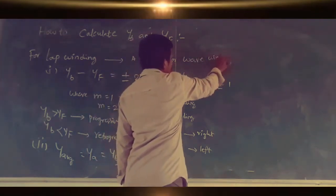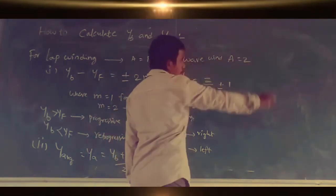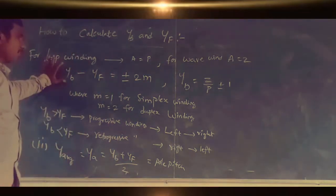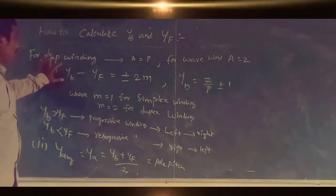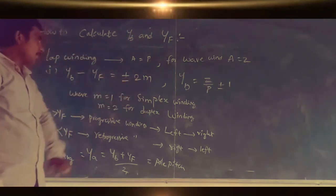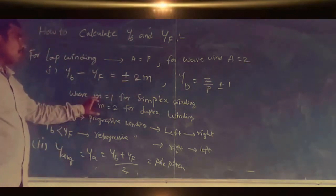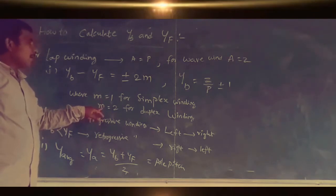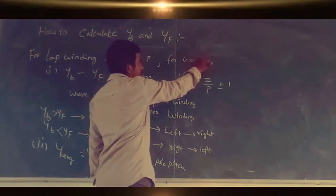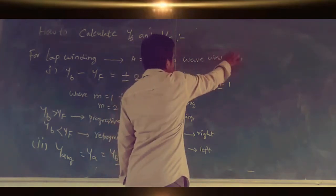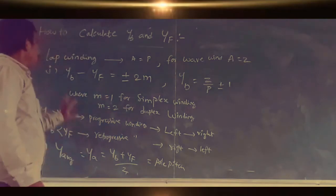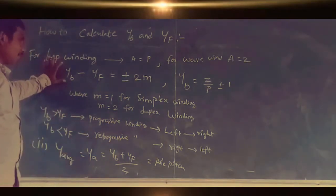For wave winding, the number of parallel paths equals 2. Now, how to calculate back pitch and front pitch: the formula is YB minus YF equals plus or minus 2M, where M equals 1 for simplex winding. Plus is for progressive winding and minus is for retrogressive winding.